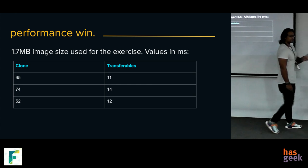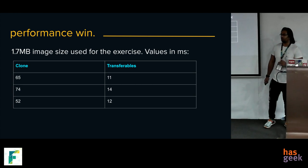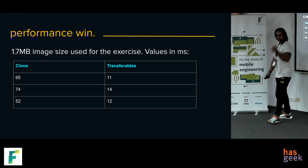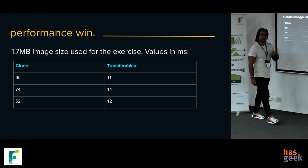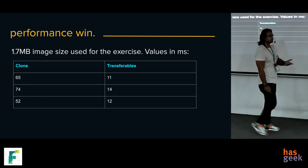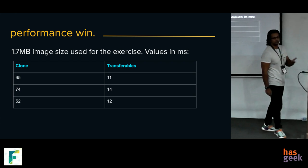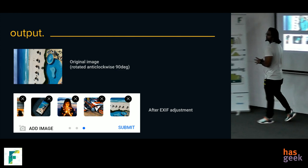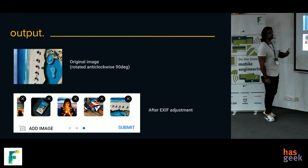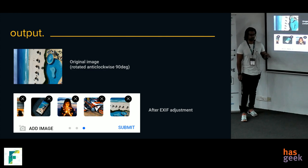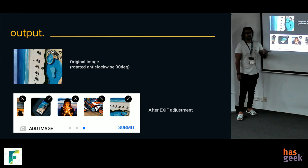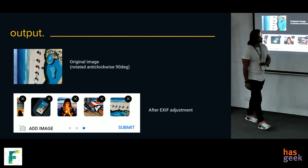Quick recap: we had the user select an image, read the array buffer, create a worker, ask the worker to compute the EXIF orientation property and return it, and used transferables if supported to make the process fast. The visual result shows that on top is what the image would look like without any of this work, and at the bottom is the Flipkart Lite UI where it correctly understands and adjusts the orientation.